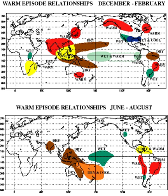During strong El Niño episodes, a secondary peak in sea surface temperature across the far eastern equatorial Pacific Ocean sometimes follows the initial peak.